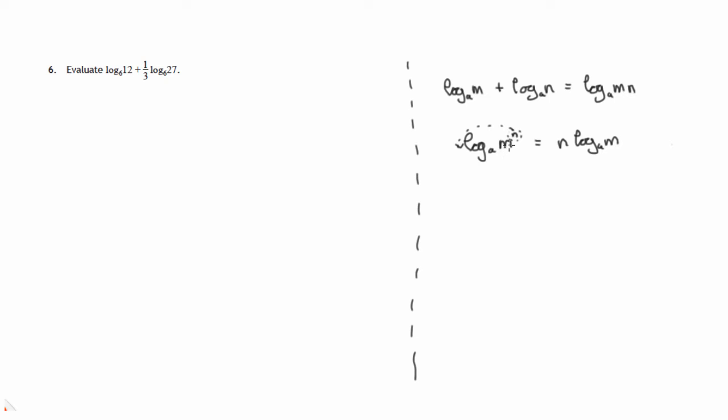So log to the base A of a power of a number, bring the index down to the front, multiply and remove that power.